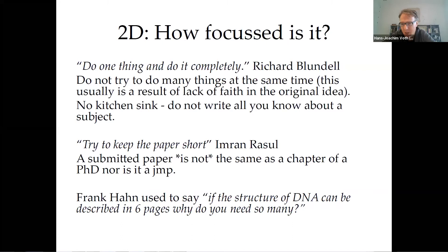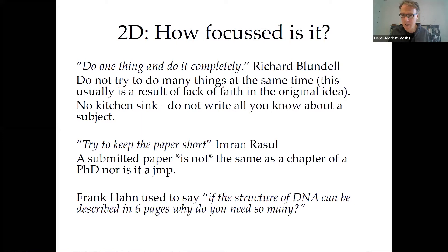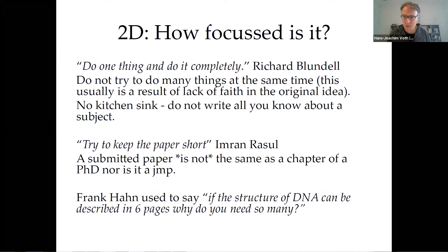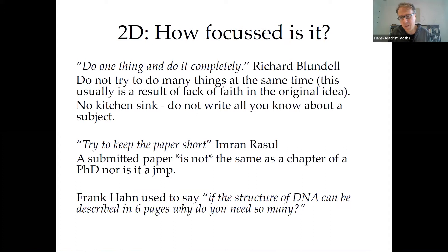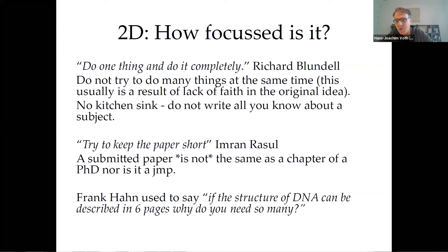How focused should it be? Richard Blundell's advice is: do one thing and do it completely. If this paper makes three important contributions, chances are it's a little bit unfocused. Keeping it short is also good. Many submissions I get nowadays are 90 pages — 40 pages of text and tables and then 50 pages of appendix. Who's really going to go through all of that? As Frank Hahn used to say: if the structure of DNA can be described in six pages, why do we need 90-page submissions in economics?